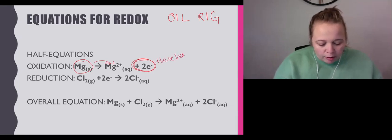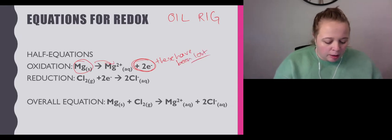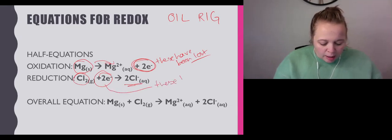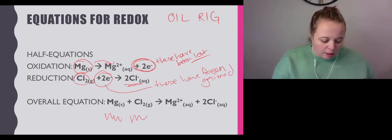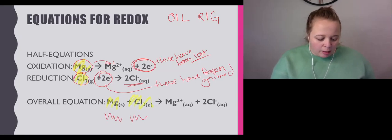The next one: chlorine gas Cl2 is going to gain two electrons to become Cl-. These electrons have been gained. We can add those two equations together. Whatever's on the left is Mg plus Cl2, and whatever's on the right is Mg2+ plus 2Cl-.